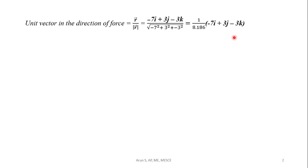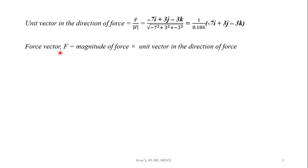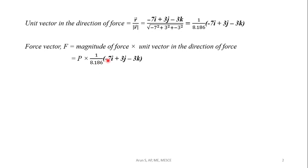We assume the magnitude of force is P. The force vector F is given by the magnitude of force multiplied by the unit vector in the direction of force. So we get F = P × (1/8.186) × (-7i + 3j - 3k).